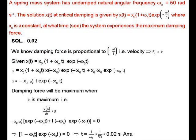Question 45: A spring-mass system has undamped natural angular frequency ω₀ = 50 rad/s. The solution at critical damping is given by x(t) = x₀(1 + ω₀t)exp(-ω₀t), where x₀ is a constant. At what time does the system experience the maximum damping force?